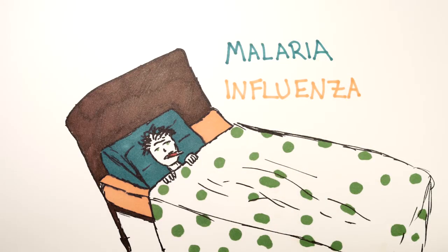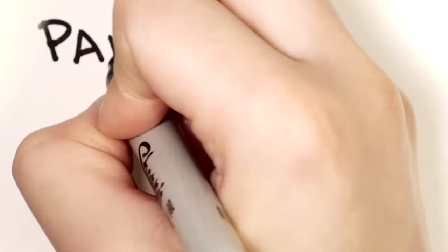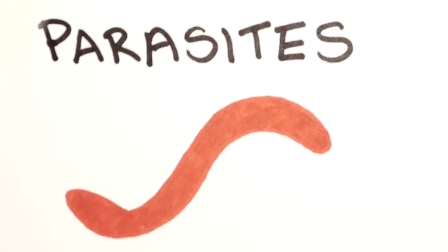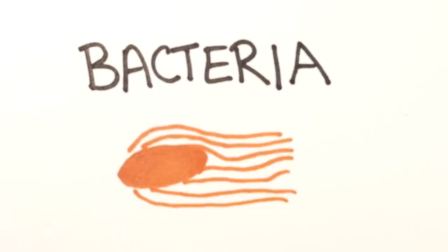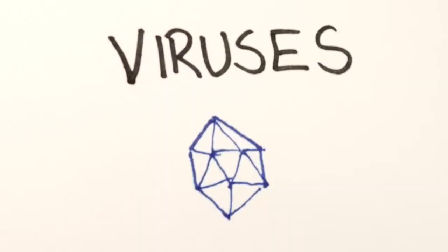There's lots of agents that can infect someone. There's parasites that cause malaria, bacteria that may infect a cut in your skin or hide out in rotten food, and viruses like the ones that cause seasonal flu or influenza.